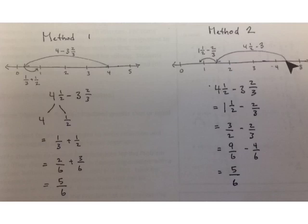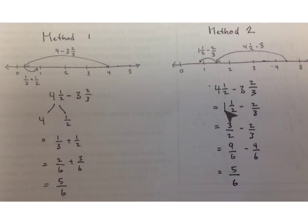In our other method, we start at 4 and 1 half and take away the whole number 3 first. 4 and 1 half take away 3 is 1 and 1 half. Then we still take away 2 thirds. We rename 1 and 1 half as the improper fraction 3 halves — 2 halves plus 1 half is 3 halves. 3 halves take away 2 thirds: our common unit is 6. 3 halves times 3 over 3 is 9 sixths; 2 thirds times 2 over 2 is 4 sixths. 9 sixths take away 4 sixths is 5 sixths.